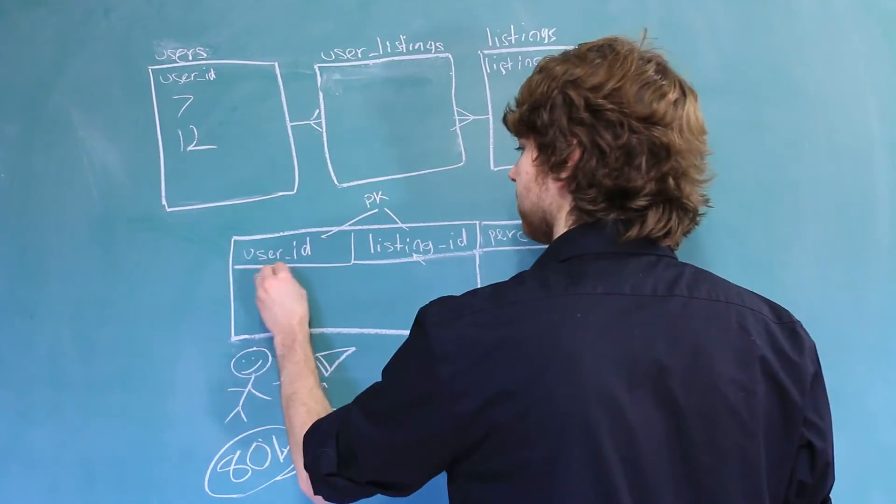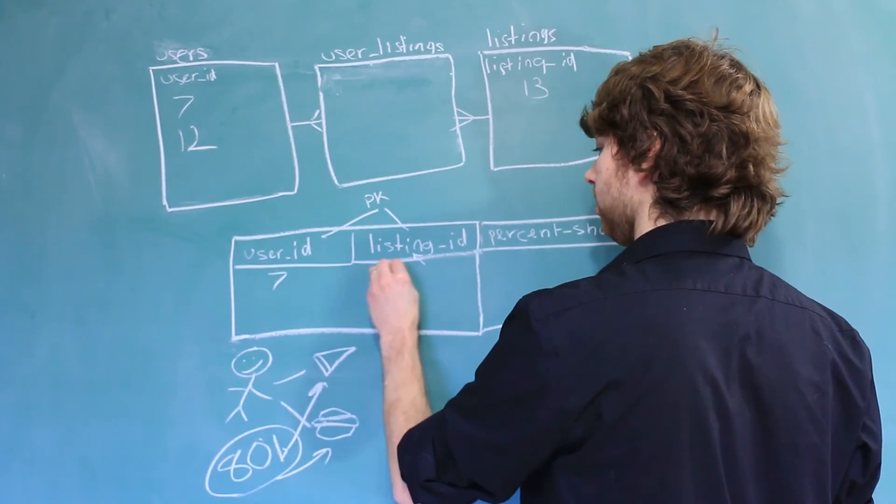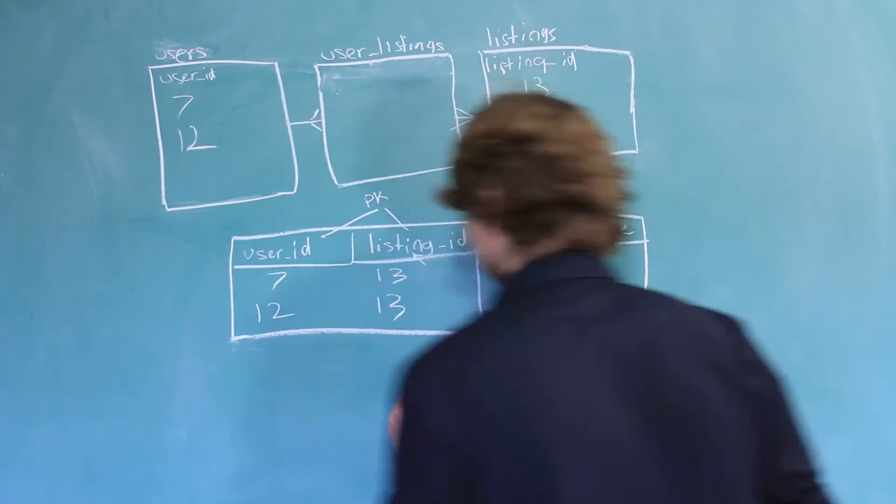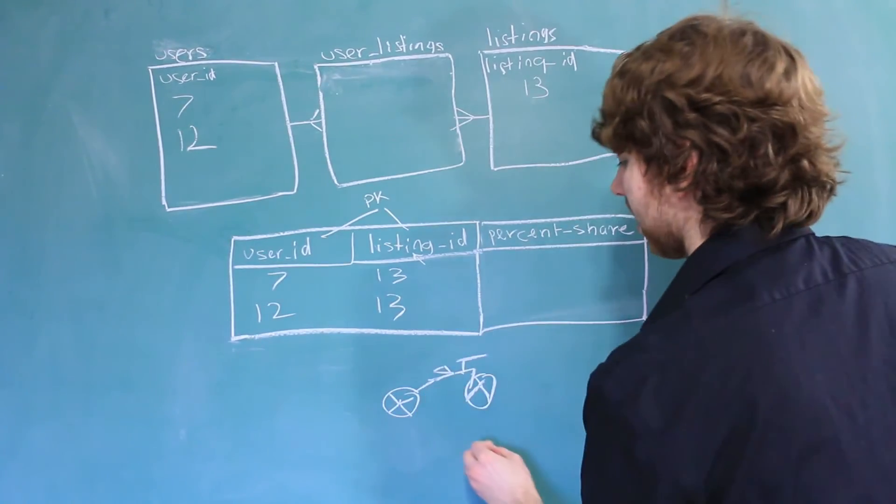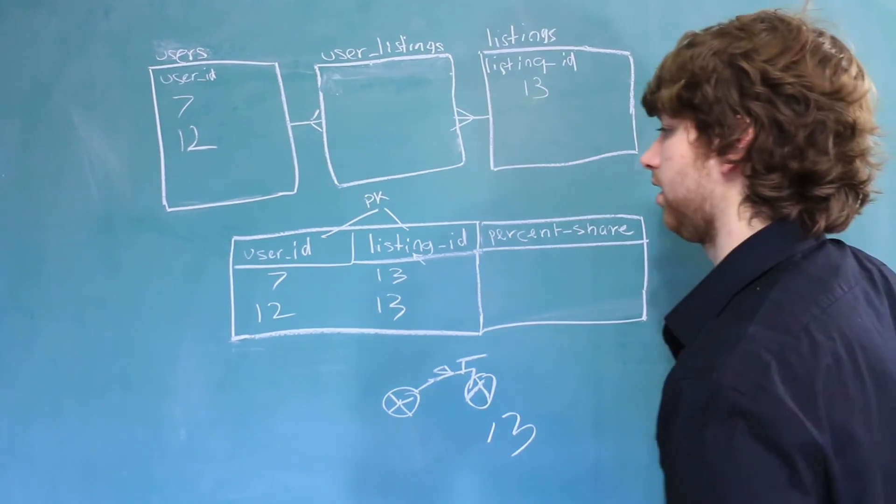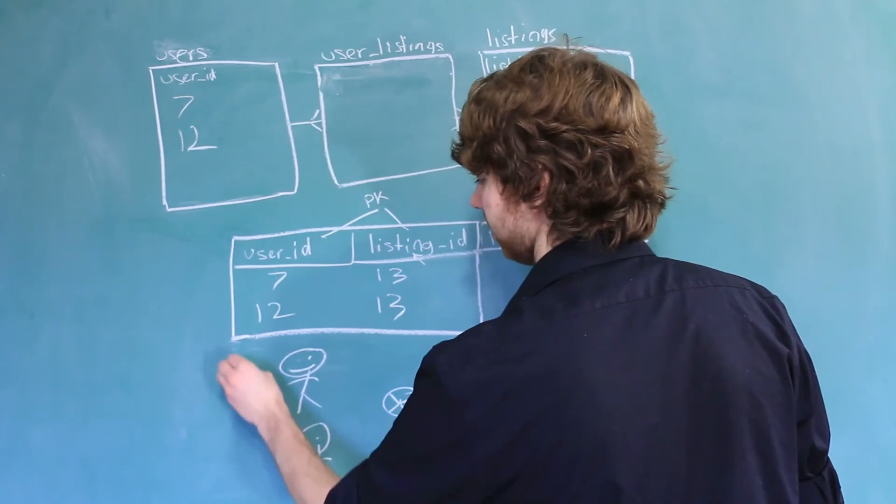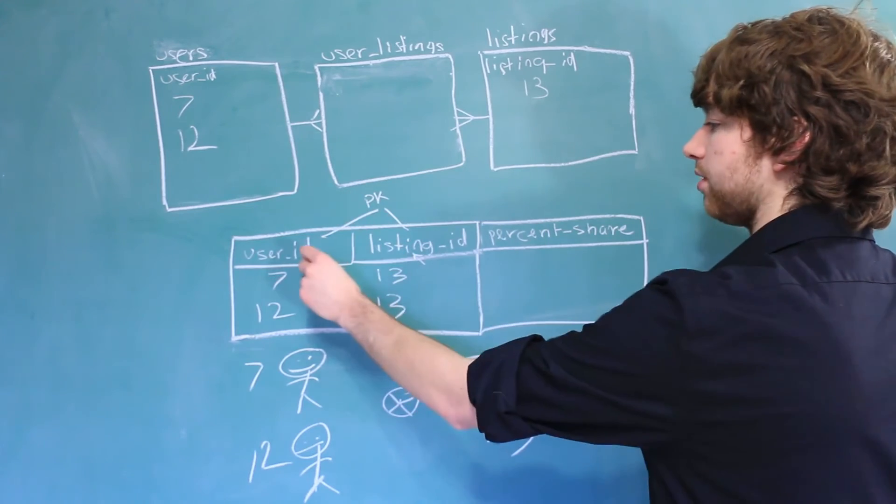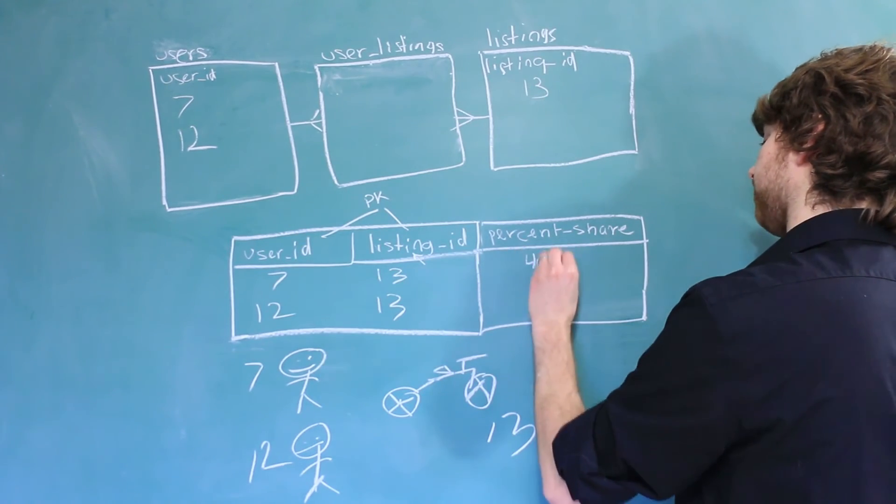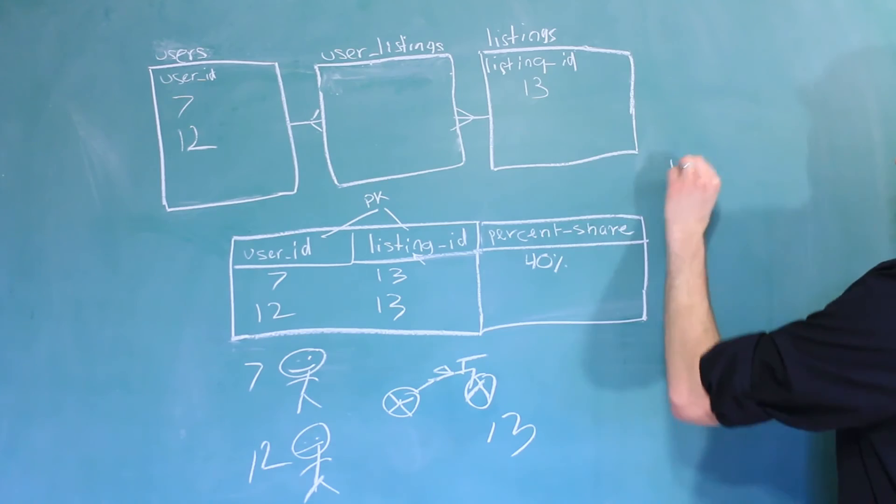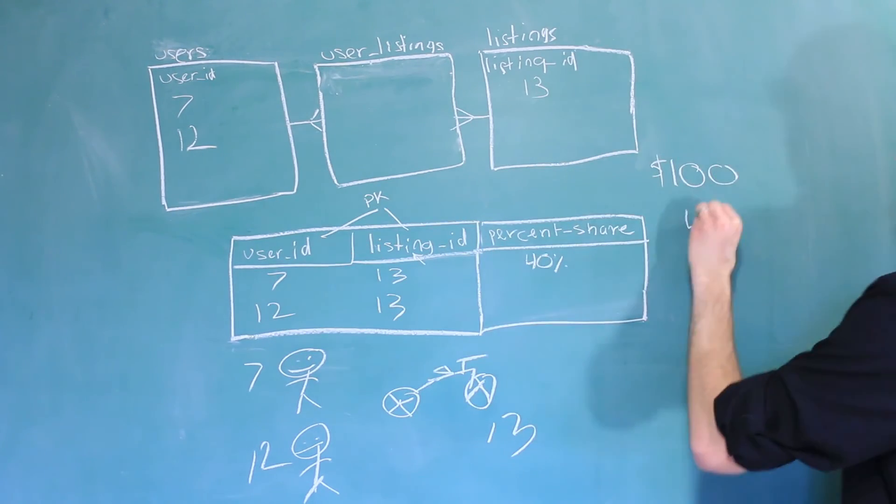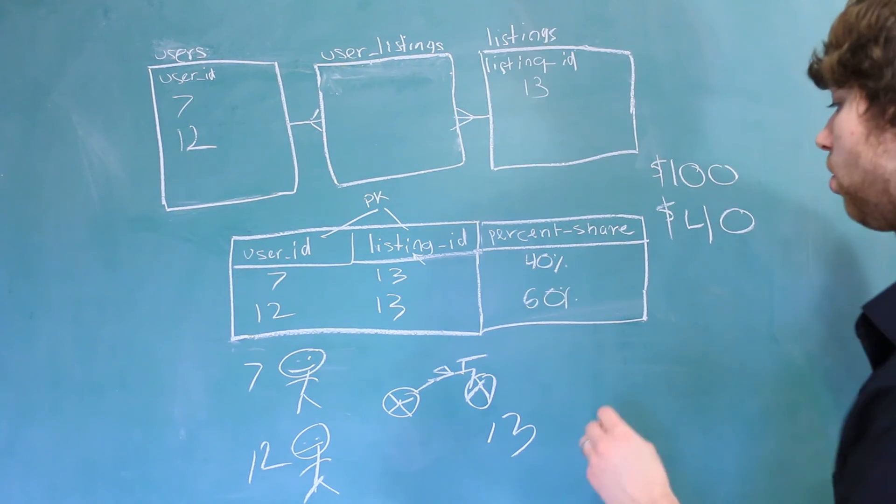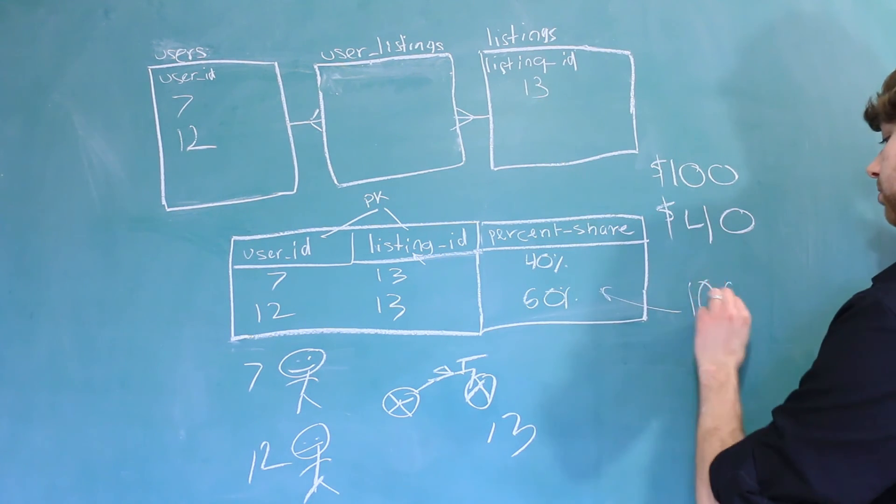So the user ID would be 7, the listing ID 13, and then user ID of 12, listing ID of 13. It's going back to the picture I just erased. This bike would have the ID of 13. The users would have the IDs of 7 and 12. Now we can give it a percent share. We could say that the guy with the ID of 7 gets a 40% share. That means if the bike sells for $100, this guy is going to get $40. And we can give him a percent share of 60. And totaling, this adds up to 100, which would make sense.